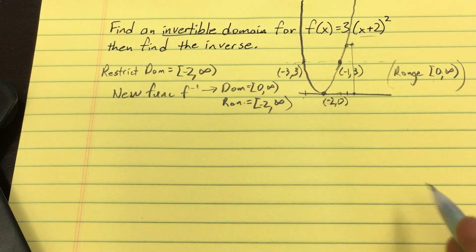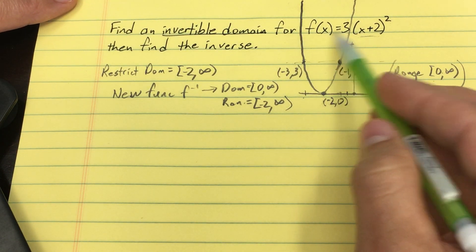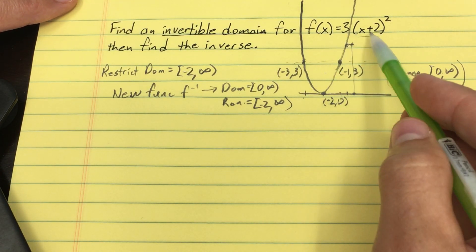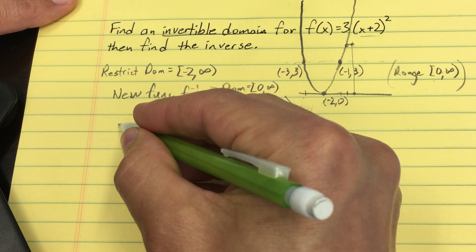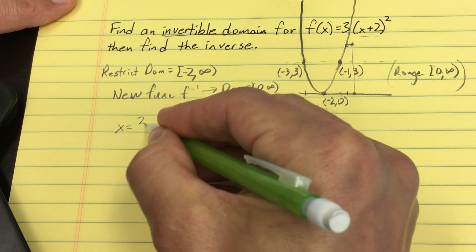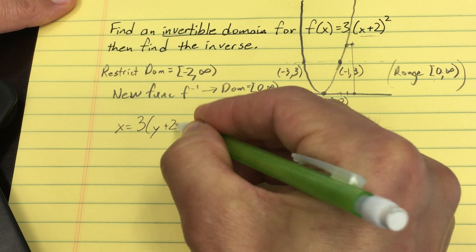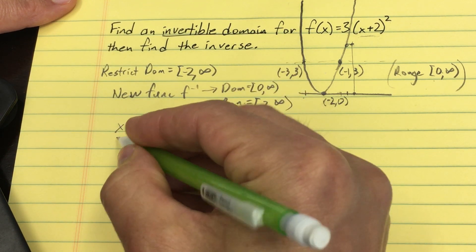And we do this through the standard approach, right? We take this equation, we swap the input and the output variables. So I'll say x equals 3(y+2)² divided by 3.